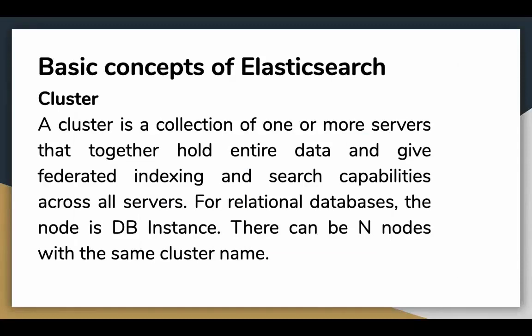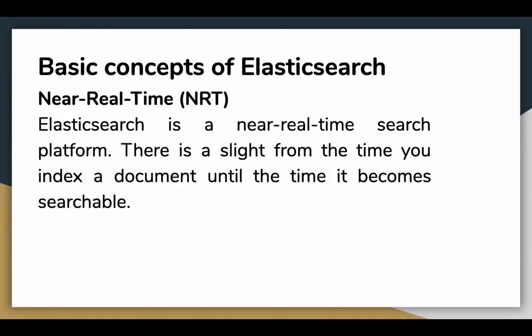Let's look at some basic concepts of Elasticsearch. First is cluster - a collection of one or more servers that together hold entire data and provide federated indexing and search capabilities across all servers. For relational databases, the node is a DB instance. There can be N nodes with the same cluster name. Next is near real-time, one of the popular features of Elasticsearch - there is a slight lag from when you index a document until it becomes searchable.